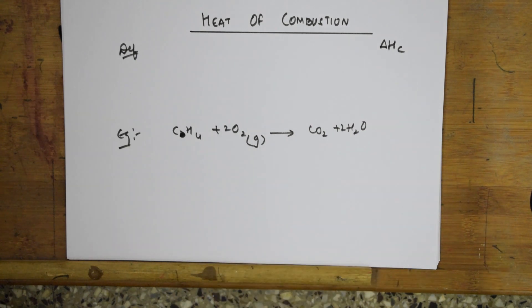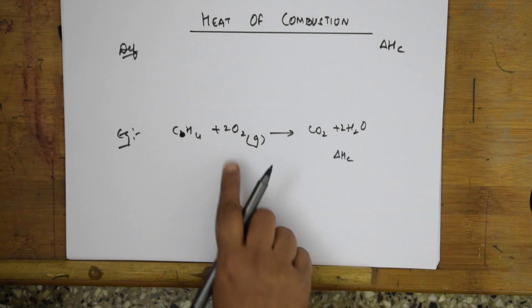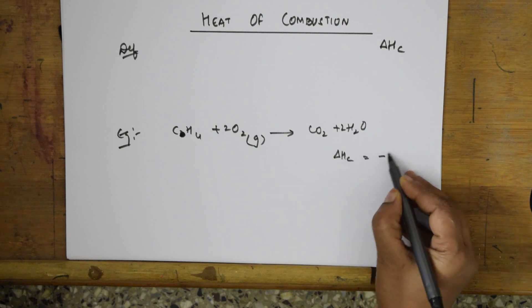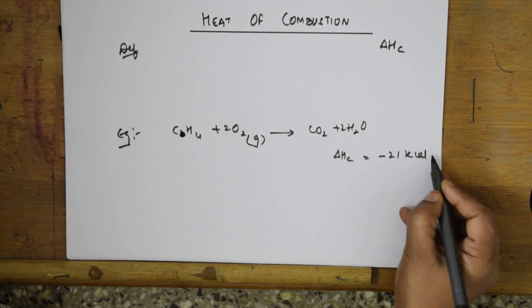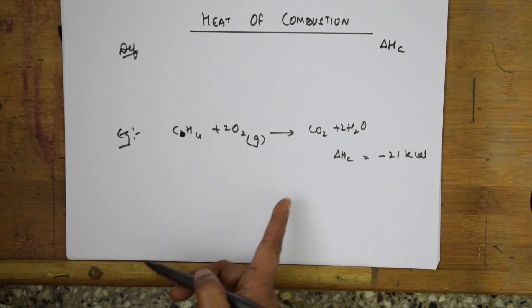Here delta Hc for this - delta Hc means it is burning in the presence of oxygen. Delta Hc value is minus 21 kilocalories. Now how will I write this combustion?